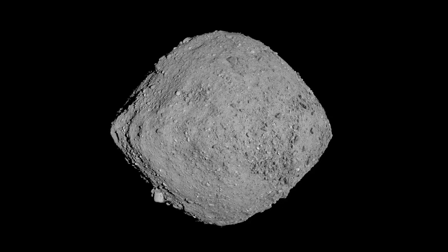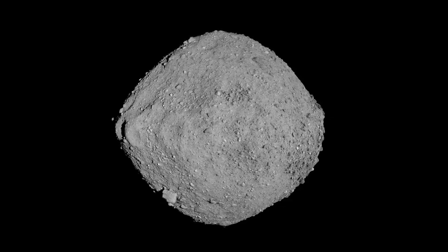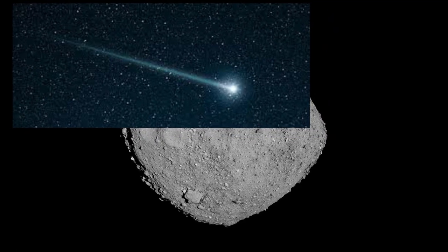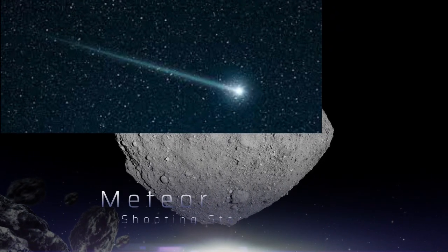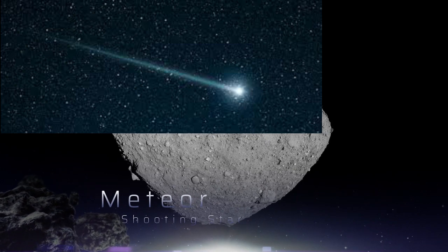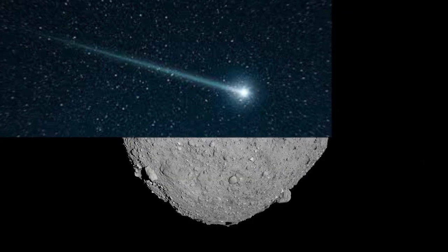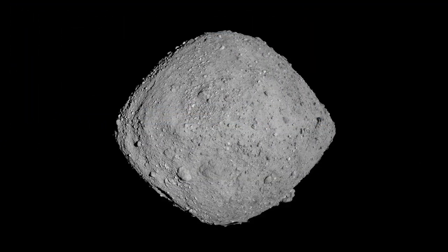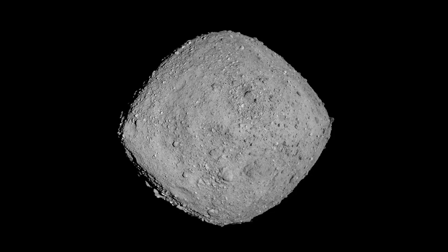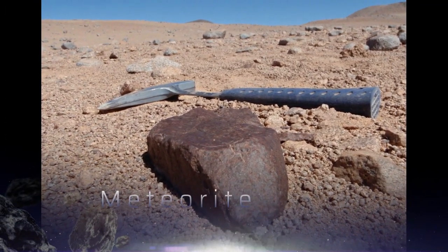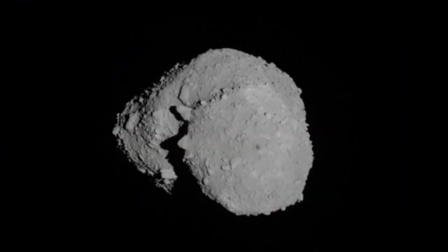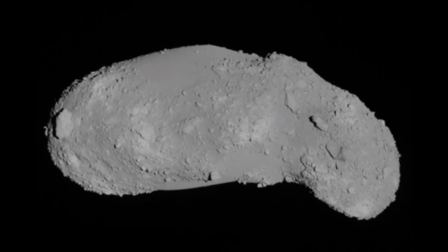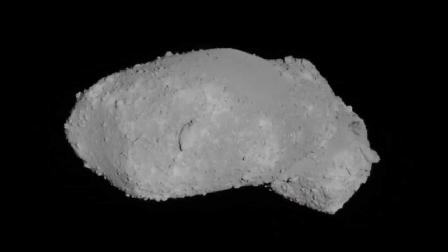Now a meteor is a phenomenon in our atmosphere which occurs when a small rocky body enters the Earth's atmosphere and vaporizes, causing a flash of light — in other words, a shooting star. And a meteorite is a small rocky body that actually enters the Earth's atmosphere as a shooting star but makes it down to the ground. So you can't pick up a meteor, nor can you see a meteorite in the sky.